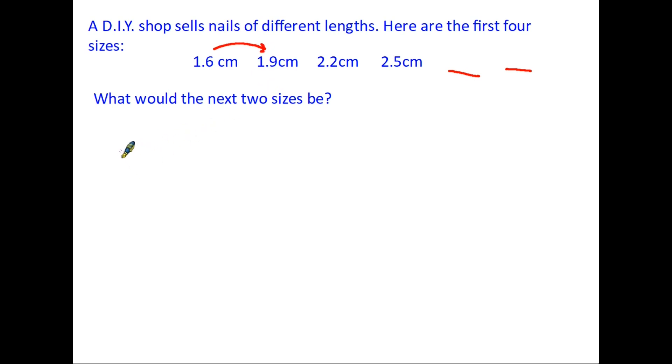Now the way to do this would be to take the 1.9 and take away 1.6, if we do that we find that the difference between the first two numbers is 0.3.